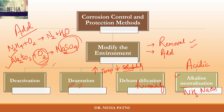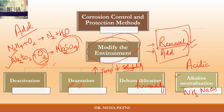To summarize this video: one method of corrosion control is modifying the environment. If we cannot do anything with respect to the metal, we can modify the environment — either remove the particular thing causing corrosion, or add something to nullify the effect of the corrosive environment. There are four ways: first, deactivate oxygen by reacting it with a compound; second, remove oxygen by increasing temperature (de-aeration); third, remove humidity or water from the air (dehumidification); and fourth, add an alkaline neutralizer to make the pH basic and reduce corrosion.